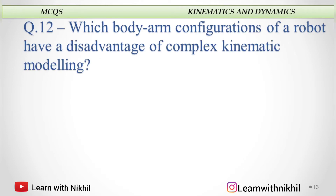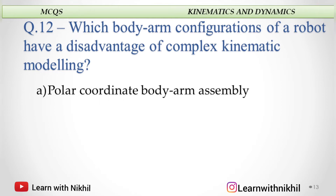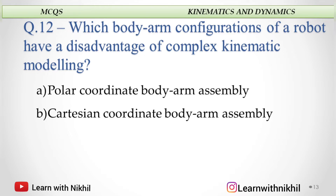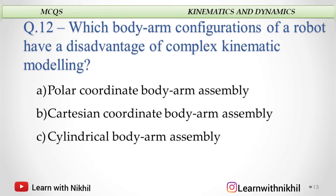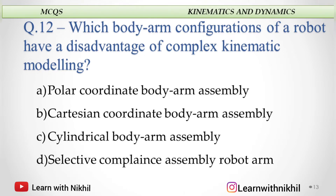Which body arm configuration of a robot has the disadvantage of complex kinematic modeling? Options are: polar coordinate body arm assembly, Cartesian coordinate body arm assembly, cylindrical body arm assembly, or selective compliance assembly of a robot arm. The answer is polar coordinate body arm assembly.